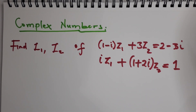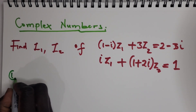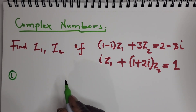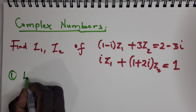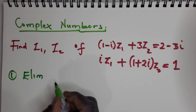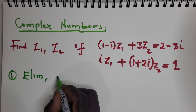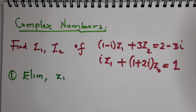If you are given a system of the following complex numbers, you're going to do the following: eliminate one of the variables. I'm going to choose to eliminate i.